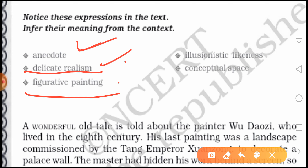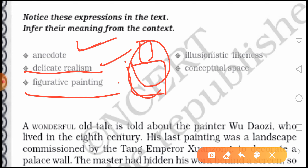Third is figurative painting. Figurative painting is an artwork which is clearly derived from a real object. For example, if there is a candlestick on a fireplace, and I make a portrait of that same candlestick — whatever you are seeing before you, the same you are painting — that is called figurative painting.